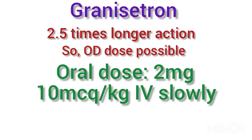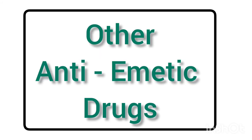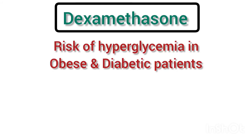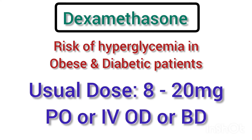Apart from the 5-HT3 receptor antagonists, other drugs that can be used for prevention and treatment of nausea and vomiting include dexamethasone, which is as effective as Ondansetron with minimal side effects, especially with one-time use. The usual dose is 8 to 20 mg once or twice daily, orally or IV.